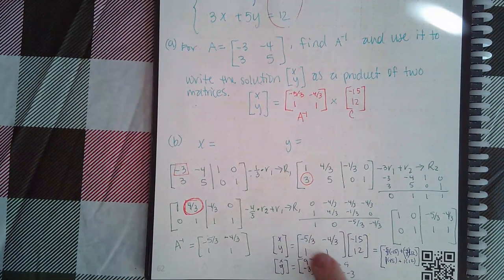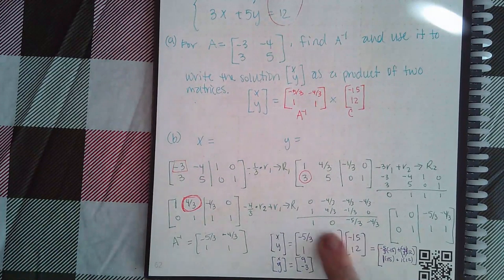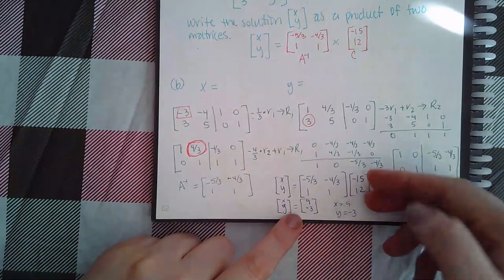I wrote x, y, and then the inverse matrix times this. Now in order for me to find out x and y, I have to actually multiply this together. So remember how matrix multiplication works. It's this row times this one column.